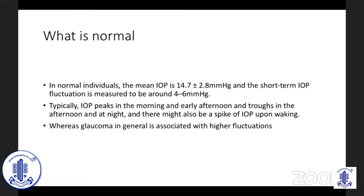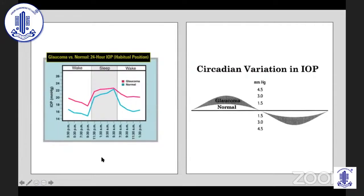What is the so-called normal fluctuation, and what happens in normal versus glaucoma individuals? In the normal population, the mean intraocular pressure is about 14 plus or minus 2 standard deviations, and the short-term IOP fluctuation is around 4 to 6 millimeters of mercury. For a typical individual, IOP peaks in the morning and early afternoon and troughs in the afternoon and at night, with some spikes on waking in the early morning. In glaucoma, it is associated with higher fluctuations — the 24-hour IOP diurnal is much higher compared to normals.